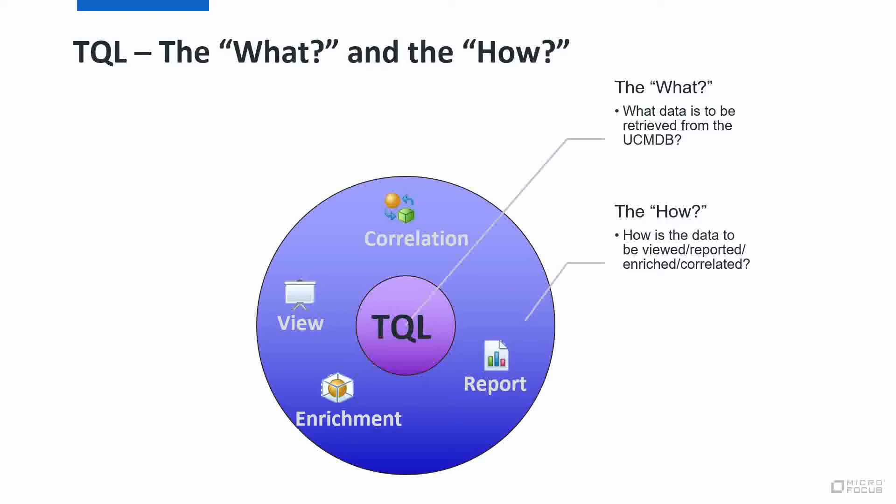For example: correlation rules or reports, enrichments, views, input TQLs, discovery TQLs, trigger TQLs, integration points — all across the UCMDB system.